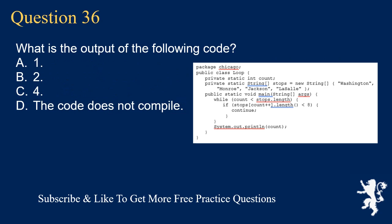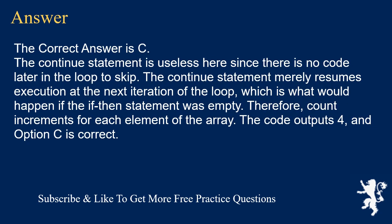Question 36. What is the output of the following? A. 1. B. 2. C. 4. D. The code does not compile. The correct answer is C. The continue statement is useless here since there is no code later in the loop to skip. The continue statement merely resumes execution at the next iteration of the loop, which is what would happen if the if-then statement were empty. Therefore, count increments for each element of the array. The code outputs 4, and option C is correct.